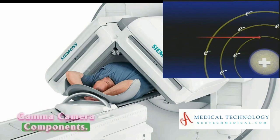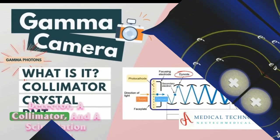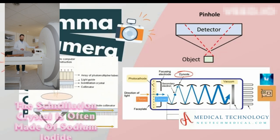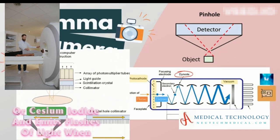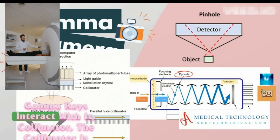Gamma camera components: The gamma camera consists of a gamma ray detector, a collimator, and a scintillation crystal. The scintillation crystal is often made of sodium iodide or cesium iodide and emits flashes of light when gamma rays interact with it.